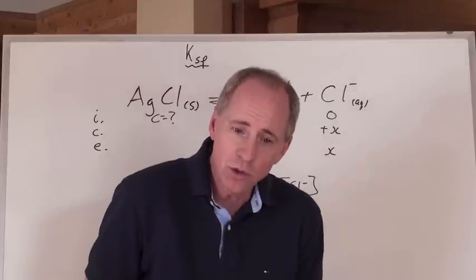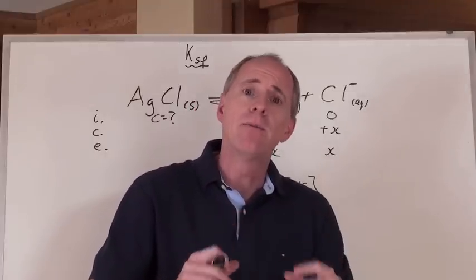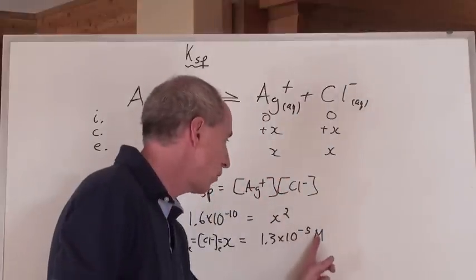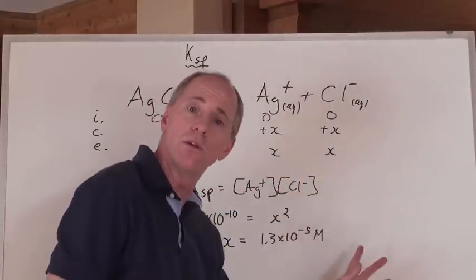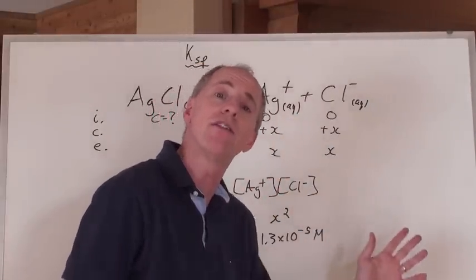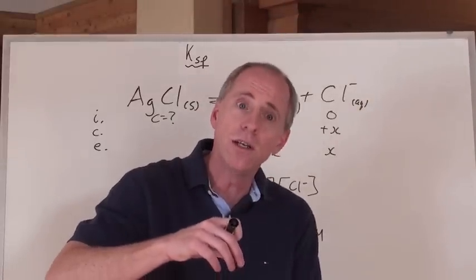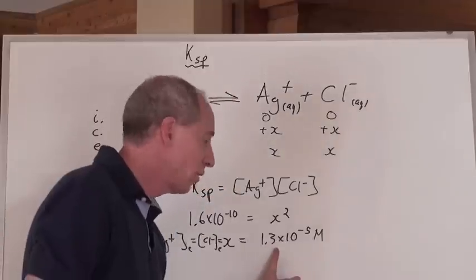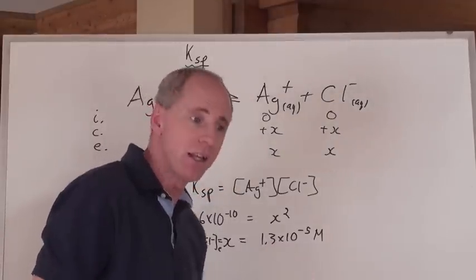Then, you know what you could do? If you knew what volume you had of a solution, then you could actually work backwards and calculate the mass from the moles per liter here. You could find the moles if you knew the volume, and then find the grams of chemical that it would take to just reach the point of complete saturation.